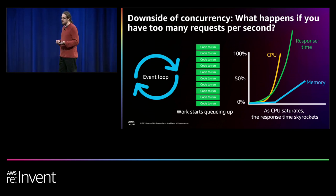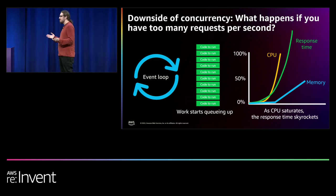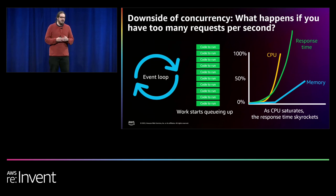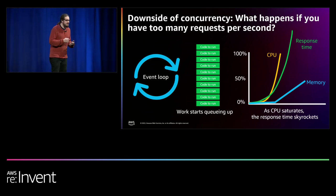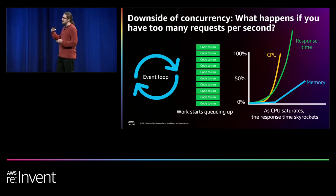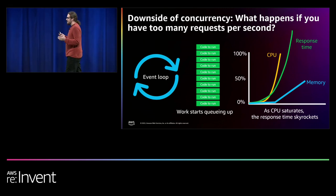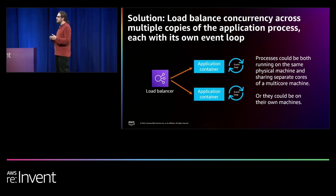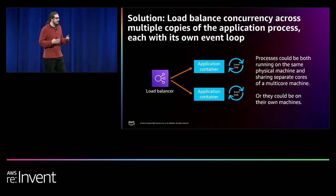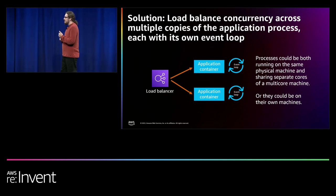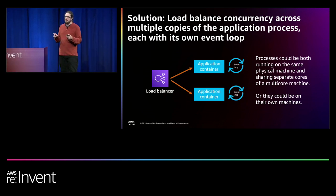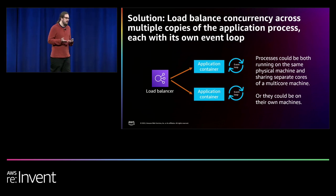This is magical but it has downsides. The main downside is what happens when you have too much concurrency. If that function handles 100 requests per second but clients start sending 110, the work queues up in memory. It takes longer and longer for the CPU to get around to the work as the queue grows — memory goes up, response time rises as CPU utilization hits 100%, and eventually requests start timing out. The solution, similar to how Lambda works, is to run multiple copies of the application in parallel with load balancing across event loops, ideally on different CPU cores or different machines.